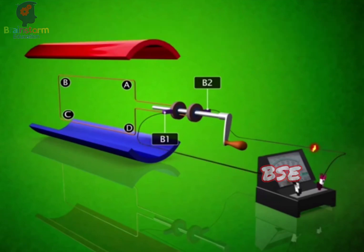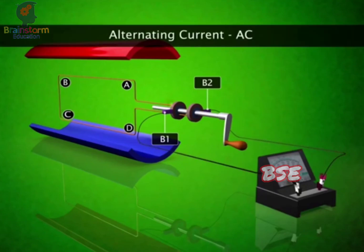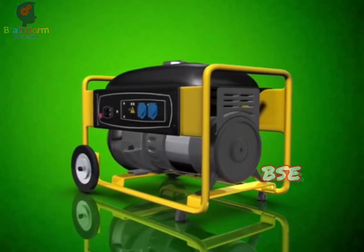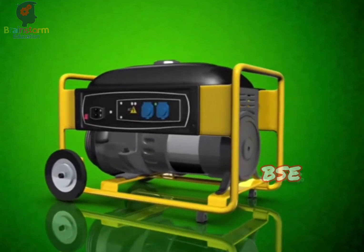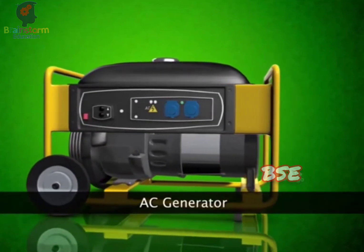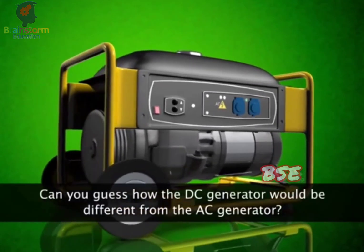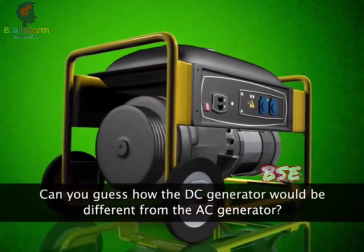Thus, after every half rotation, the direction of the current in the external circuit changes. Such a current that changes direction after equal intervals of time is called alternating current, abbreviated as AC. The device that helps generate such an alternating current is called an AC generator. Can you guess how the DC generator would be different from the AC generator?